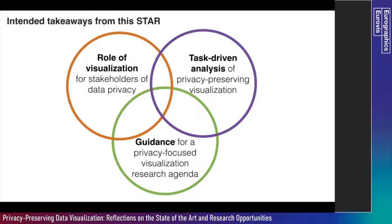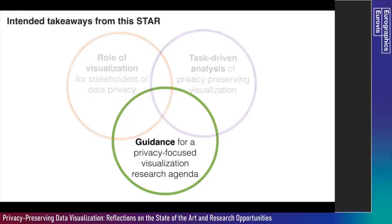With that we come to the last segment of our presentation. So far we have discussed the role of visualization in the data ecosystem, talking about different privacy stakeholders like data owners, data custodians, data subjects, and consumers, and then creating a mapping between those roles and the problems and solutions proposed in the literature. What we will do now is synthesize those findings and provide guidance for a privacy-focused research agenda of the future — creating a mapping between what has been done and what can be done through the lens of existing research areas in data visualization like uncertainty visualization or urban data visualization.